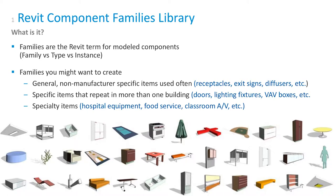Focus your libraries on items that are used across buildings. If a component is specific to one building, you probably don't want to build it in your library. But if you have standardized doors used across all buildings, that might be worth building. Lighting fixtures are another example. Keep in mind that for owners, the goal of a model is not a fabrication-level model — a FIM model is meant to get data out for space management and asset management, and to use as a background for renovation projects going forward.